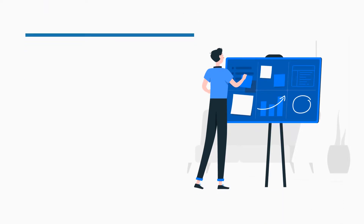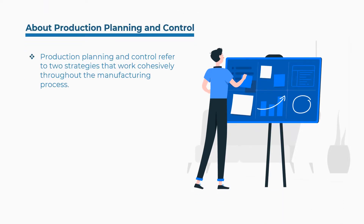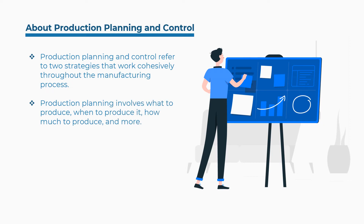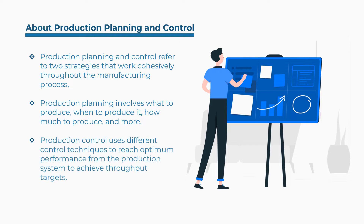So let's understand: what is production planning and control? Production planning and control refer to two strategies that work cohesively throughout the manufacturing process. Production planning involves what to produce, when to produce it, how much to produce, and more. Production control uses different control techniques to reach optimum performance from the production system to achieve throughput targets.